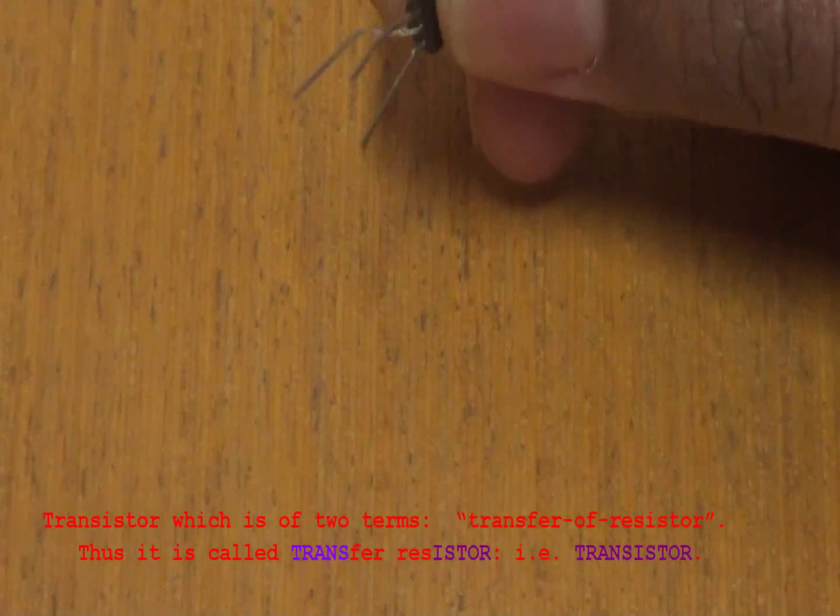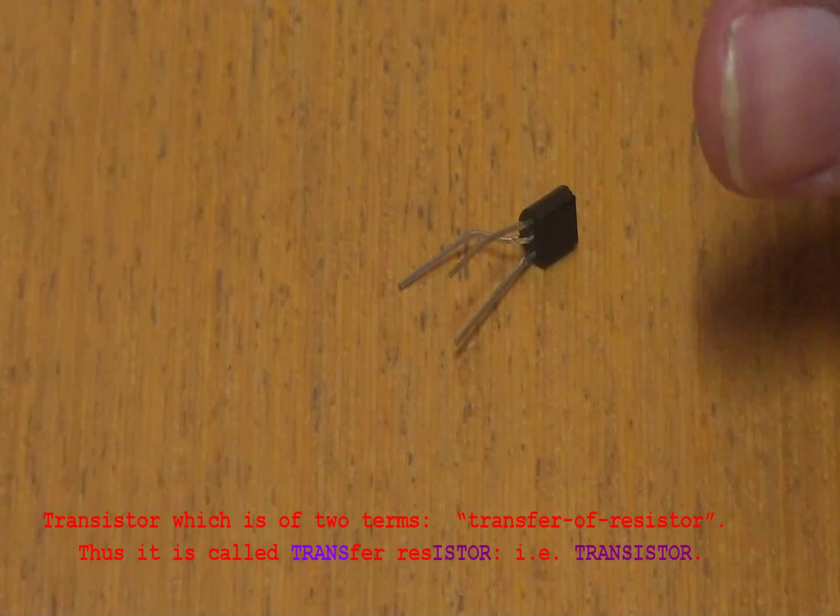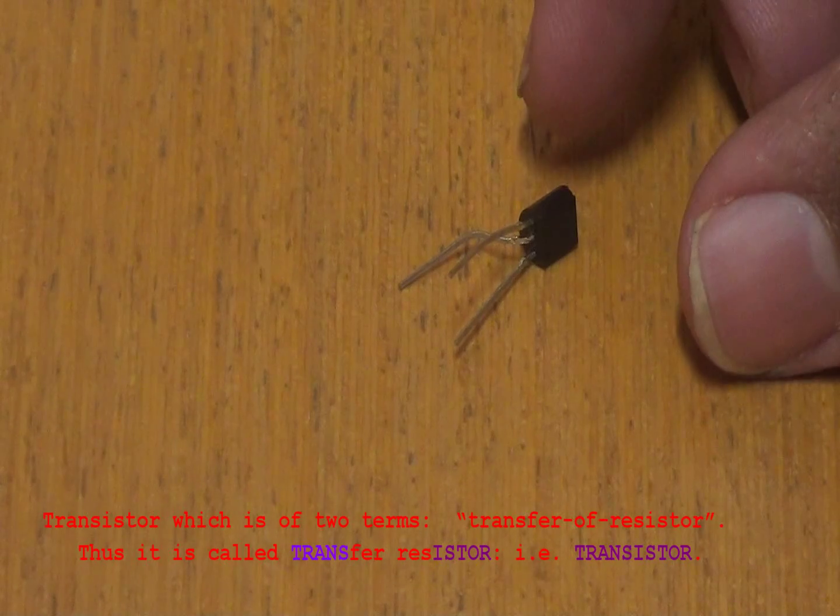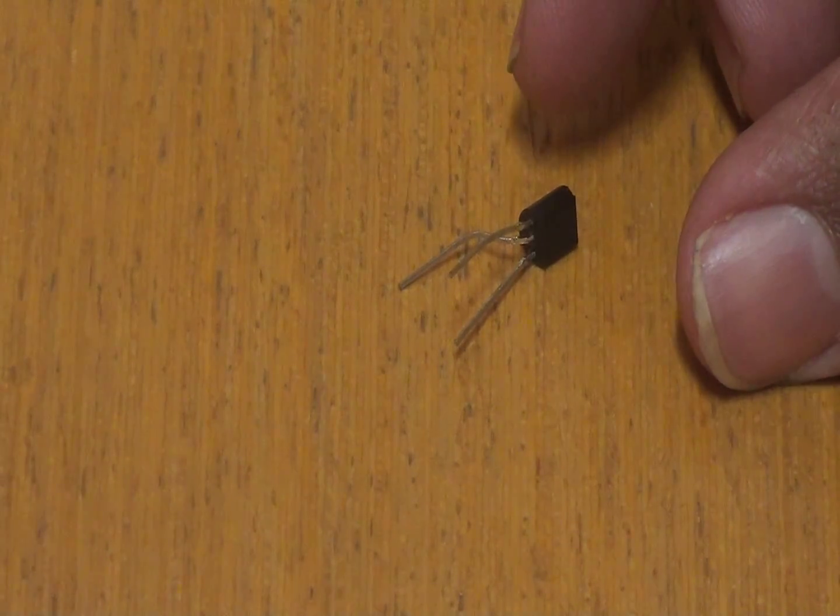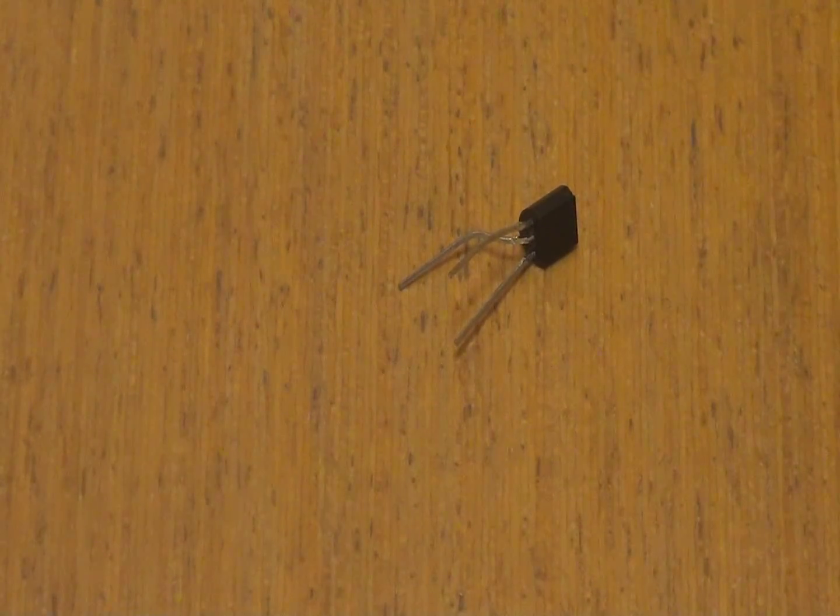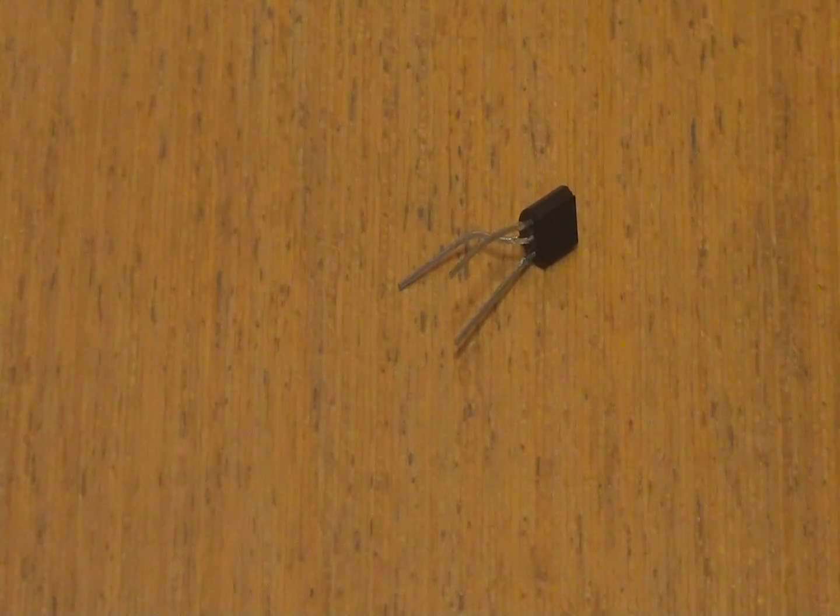So this is a BC547 transistor as you can see here. It is named a transistor because it comes from two terms, that is transfer of a resistor. It means that the internal resistance of the transistor transfers from one value to another value depending on the biasing voltage applied to the transistor. Thus it is called transfer resistor, that is a transistor.